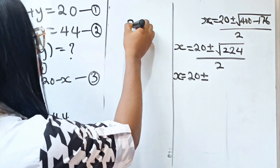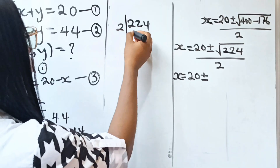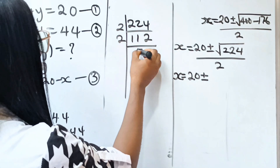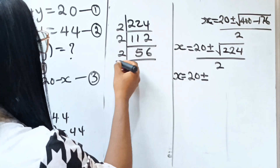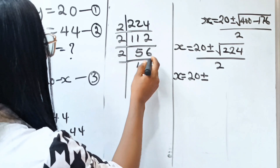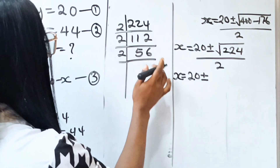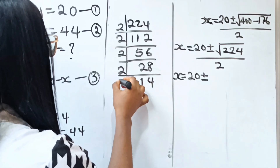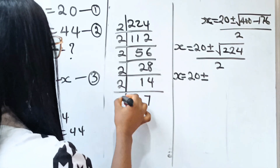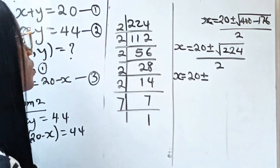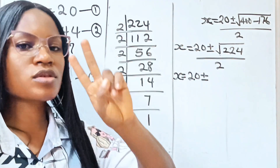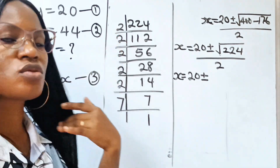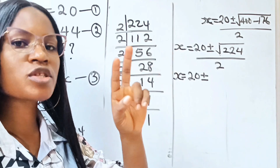So we have 224. We divide by 2 to get 112, divide by 2 to get 56, divide by 2 to get 28, divide by 2 to get 14, divide by 2 to get 7, divide by 7 to get 1. Because this is a square root — meaning we take pairs — we take 2s in pairs and multiply them together.